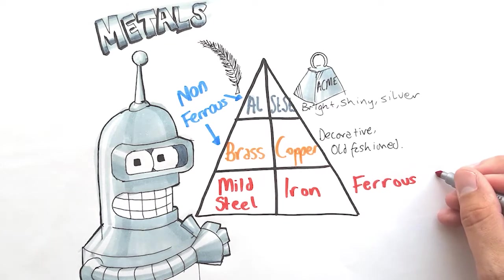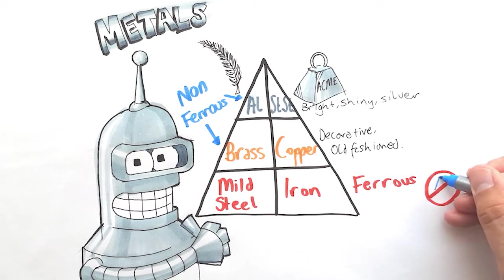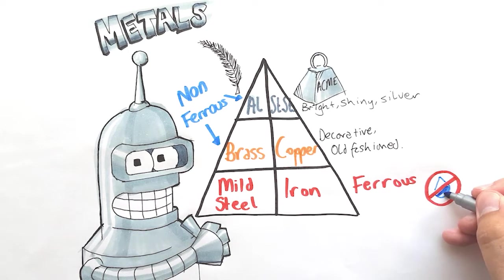At the bottom, as I've mentioned, mild steel and iron, both ferrous metals which means they contain iron. They're both highly at risk of rust that occurs as a result of water.